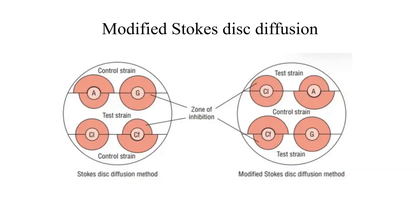In Stokes diffusion method, we have one more method that is modified Stokes disc diffusion method. Here we have only one difference. We already complete all that. The Muller-Hinton agar we will divide into three parts, first part, second part, and third part. In Stokes diffusion method, the center portion, we will lawn culture the test strain and all other portions, the first and third part, we will add the control strain.